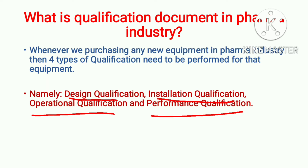All these qualifications are again divided into two parts: protocol and report. For example, if we are performing Installation Qualification, we need two documents — Installation Qualification Protocol and Installation Qualification Report. Similarly, for Operational Qualification we have OQ Protocol and Report, and for Performance Qualification we have PQ Protocol and Report.